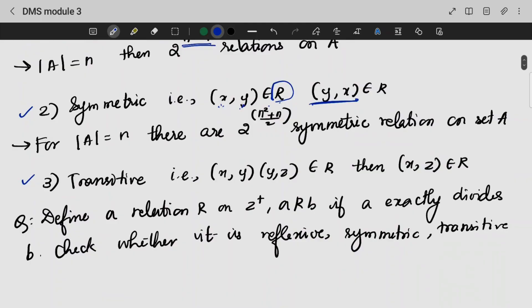Transitive: if (x,y) and (y,z) are part of R, then (x,z) should also be a part of R. The number of symmetric relations is 2 raised to n square plus n by 2.